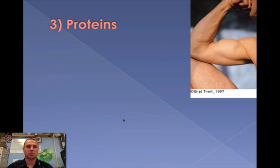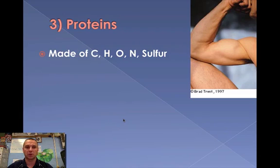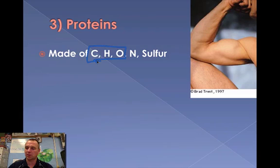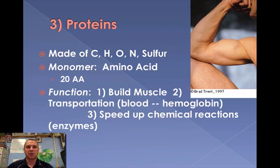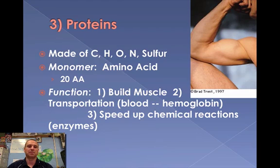The third organic compound is proteins. Proteins are made up of carbon, hydrogen, oxygen, nitrogen, and sometimes sulfur. Notice the same core backbone — carbon, hydrogen, and oxygen are in each one of these compounds. The monomer is an amino acid. There are 20 amino acids, and we'll learn more about these when we get into DNA. The functions of proteins are to build muscle, transportation — hemoglobin is a protein that carries oxygen in the blood — and to speed up chemical reactions through enzymes.